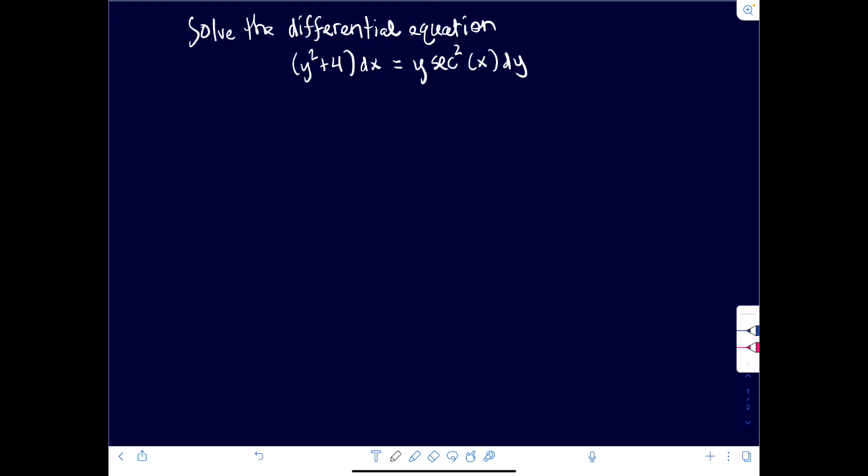So here, let's go ahead and rewrite where dy is on the left side. People tend to like that. So we have y times secant squared of x dy is equal to quantity y squared plus 4 dx.